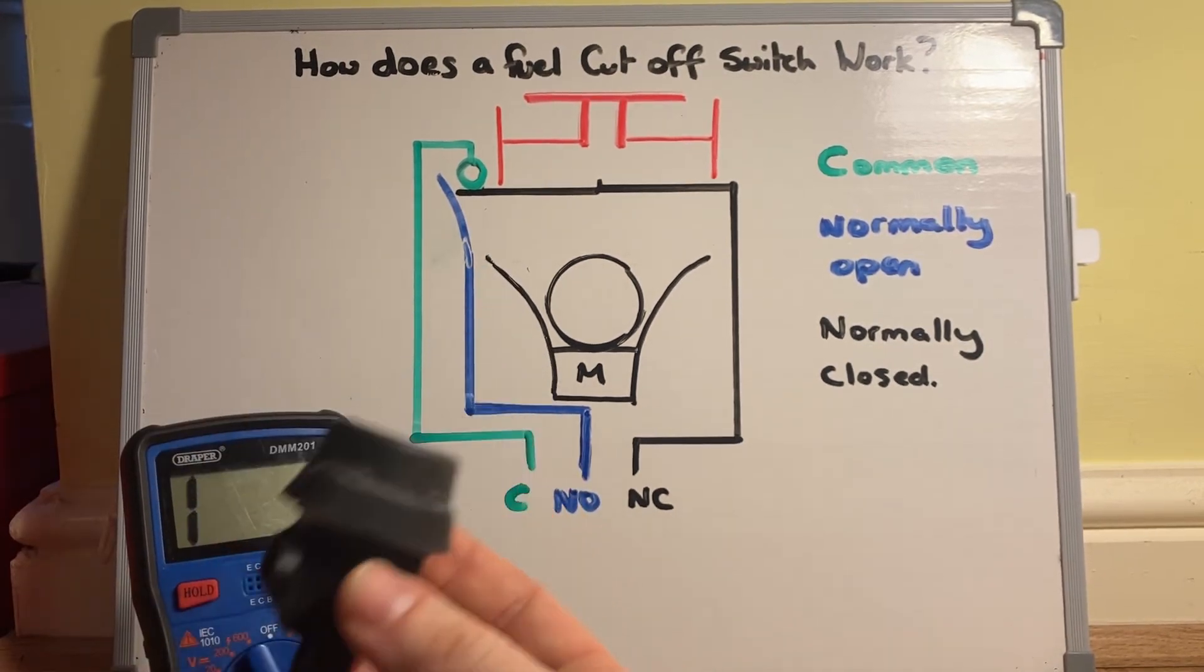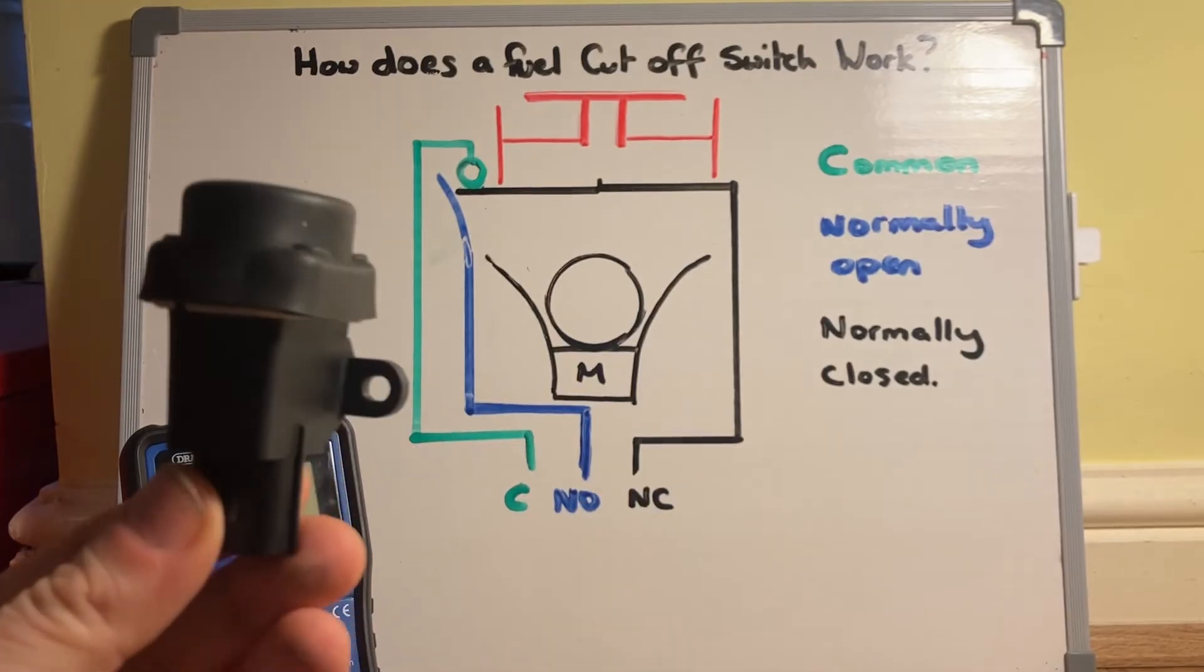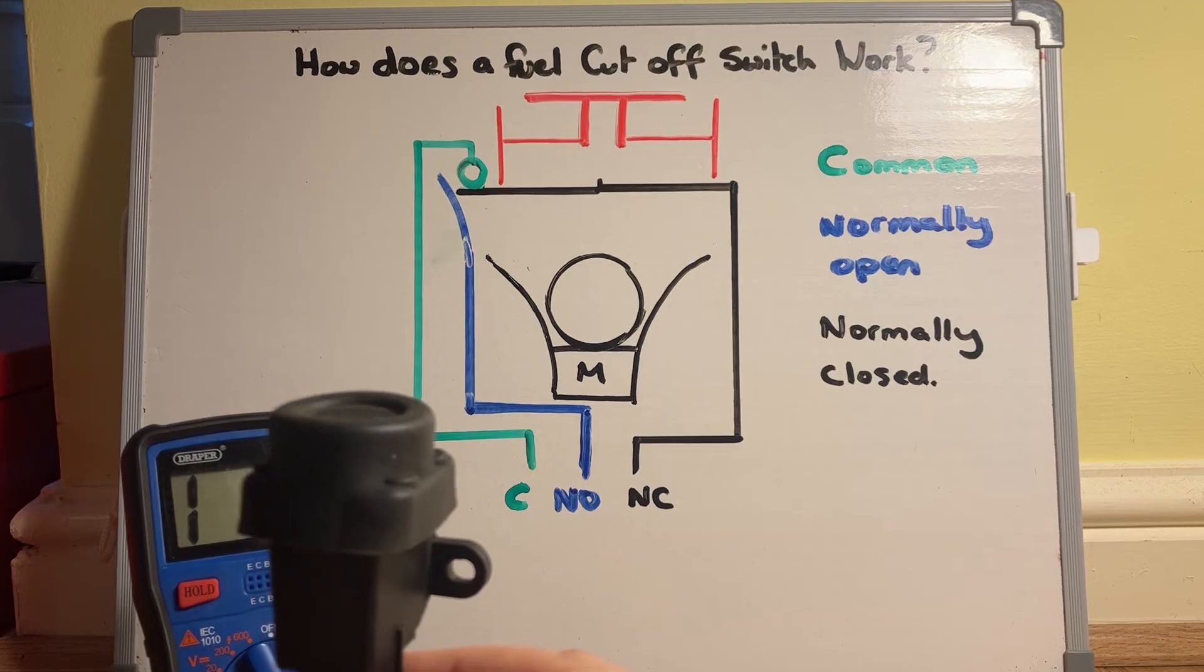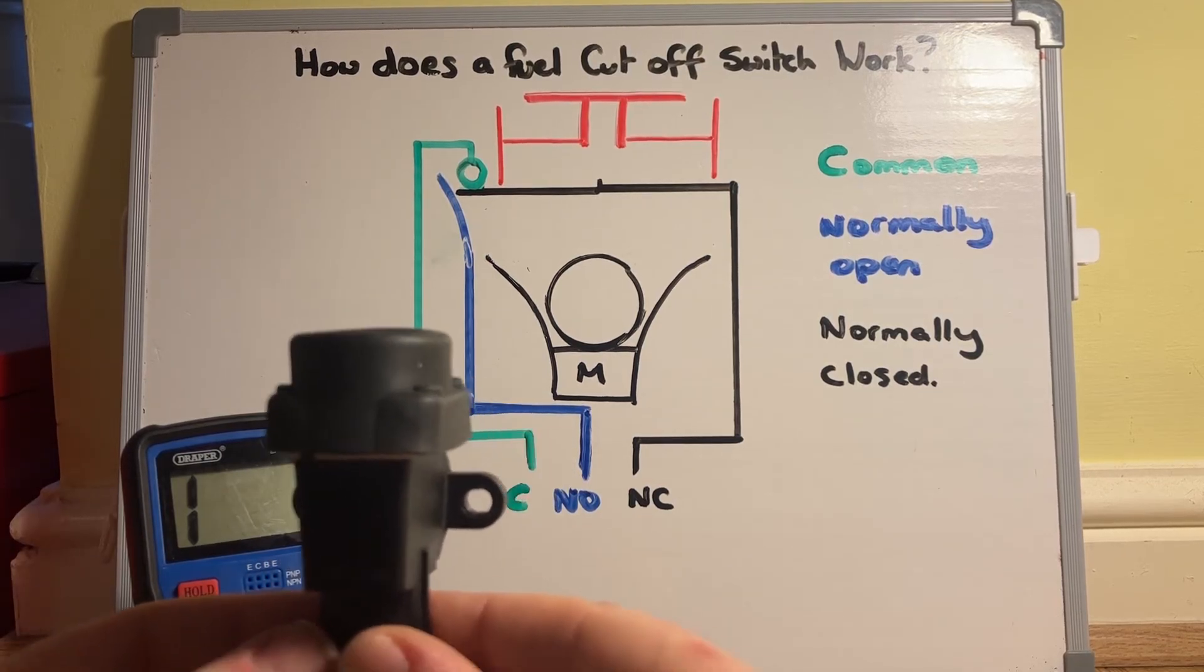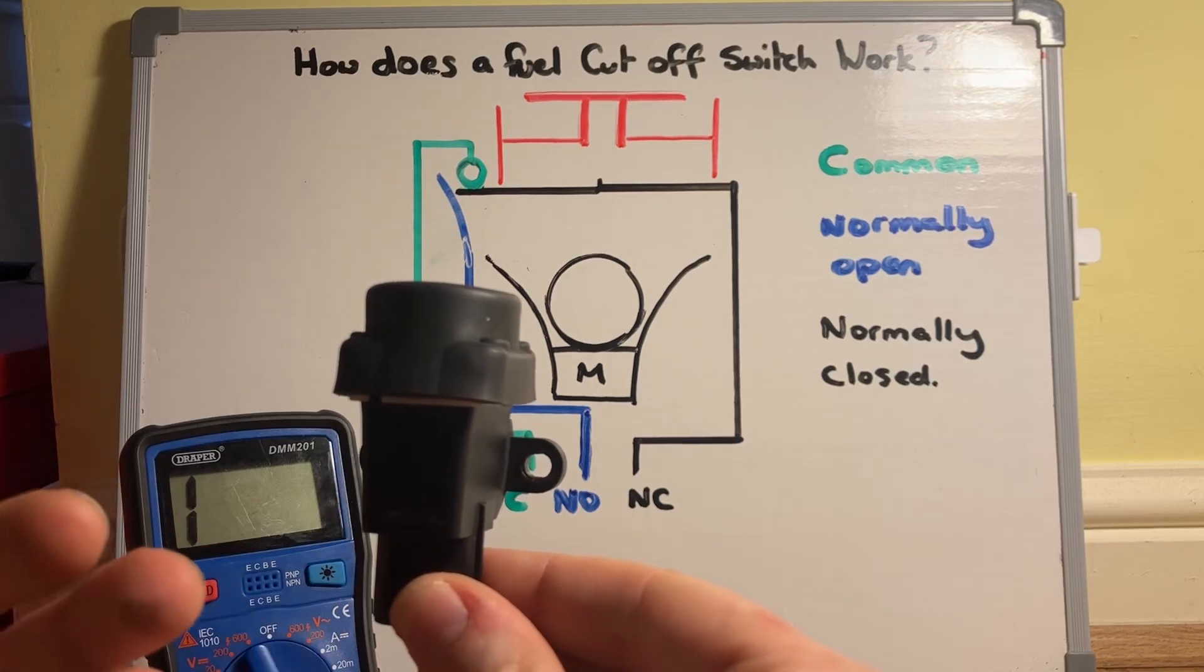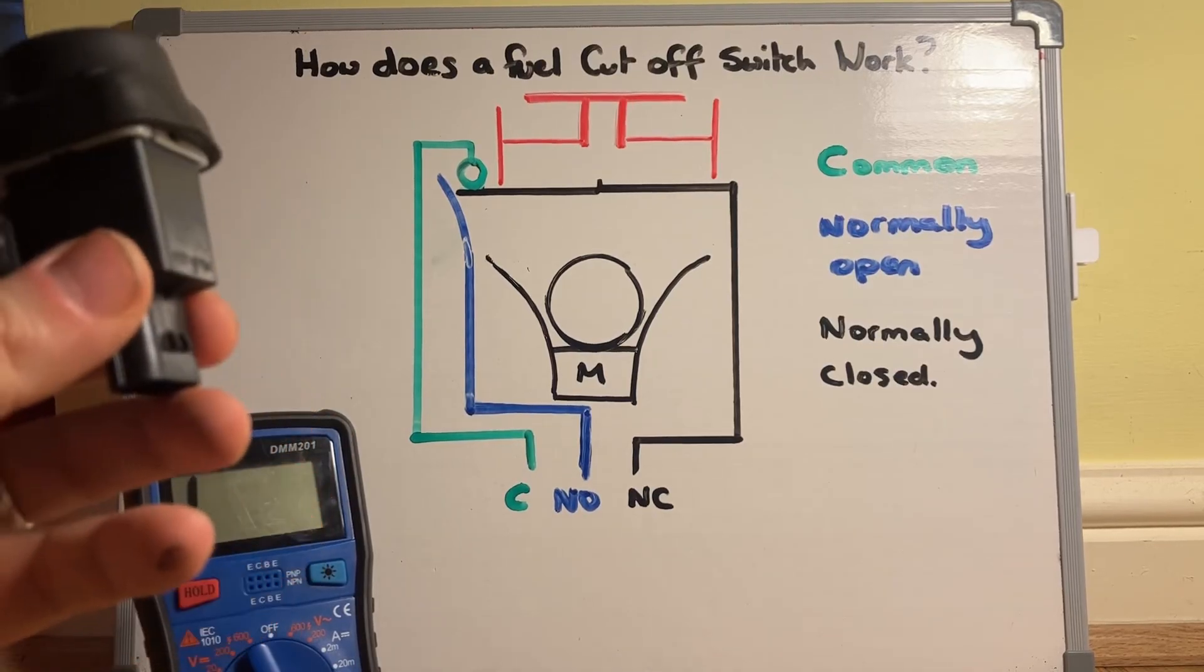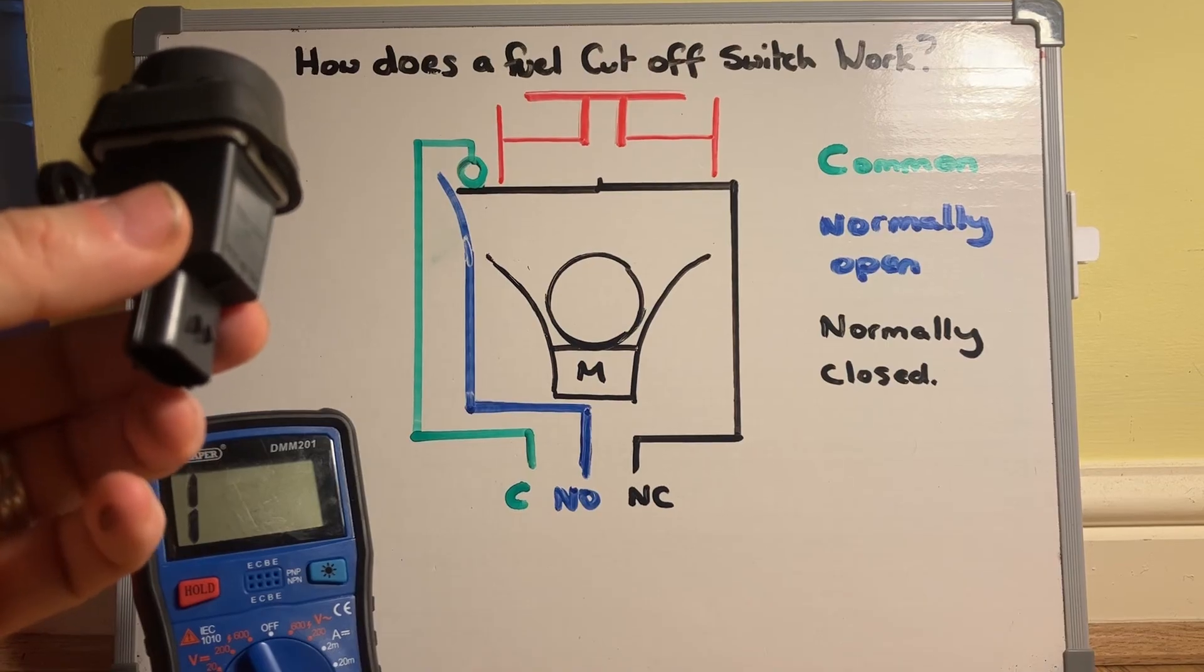When do these fail? Obviously I've said during an accident, but also it's worth checking them if you're not getting any fuel supply after a car's been towed or jacked up or raised in some sort of way. I know there's some Hondas particularly I'm aware of recently that at a certain angle this will move and it will cut off the fuel supply even though the car's not been in a crash.